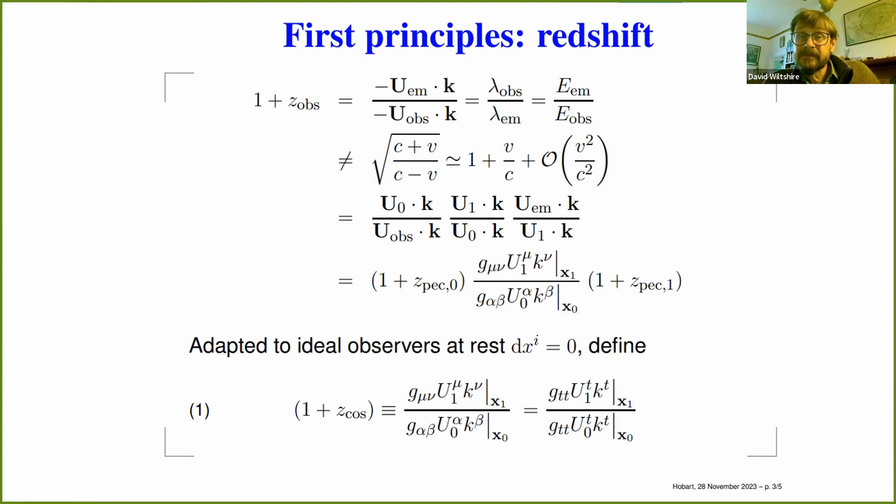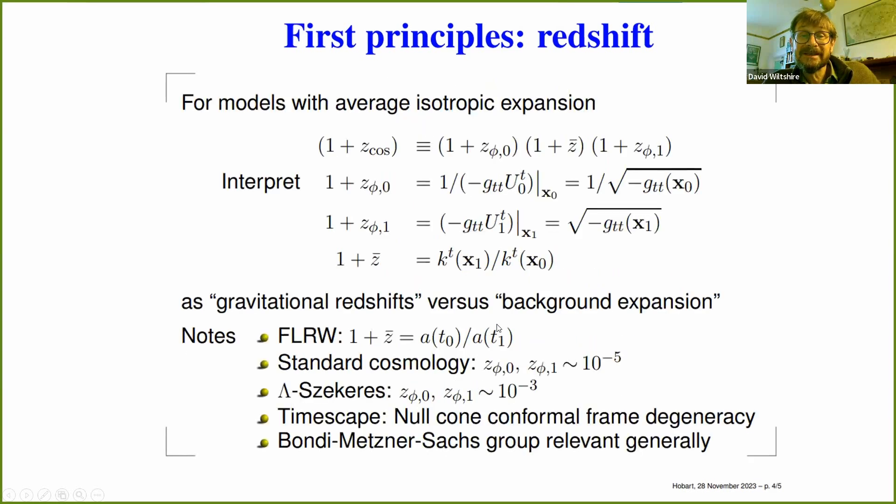You can look at any redshift and break it up into various components involving peculiar velocities, some expansion of the background. And the important difference is that you've got to understand there is an ambiguity as to what you call expansion when things are expanding. What is expansion, and what is motion?